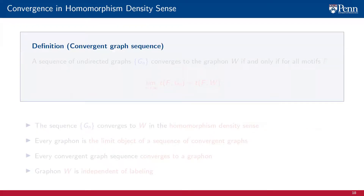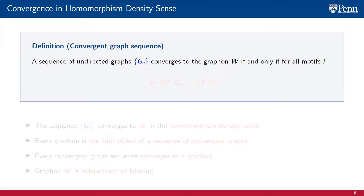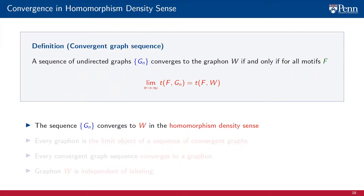With these definitions in place, we can now define convergent graph sequences. A sequence of undirected graphs Gn converges to the graphon W if and only if, for all motifs F, the homomorphism density of motif F into graph Gn converges to the homomorphism density of motif F into the graphon W as n goes to infinity. Convergence of graph sequences to a graphon entails convergence of the homomorphism densities of all motifs — we say the sequence Gn converges to W in the sense of homomorphism density. An important aspect is that every graphon is the limit object of a convergent graph sequence.